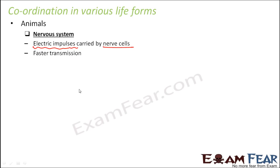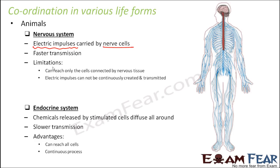In the nervous system, transmission is very fast — the electric impulses carried by nerve cells are really fast. That is why as soon as you get an electric shock, you immediately jump off without needing much time to think. However, there are limitations: electric impulses can only reach cells that are connected by nervous tissue. Only those cells connected by nervous tissue can receive the information; it cannot reach cells not connected by nervous tissue.